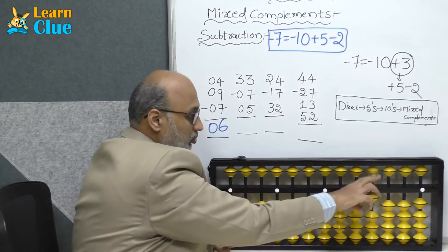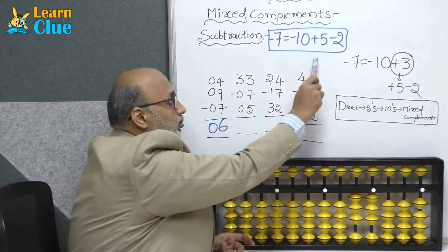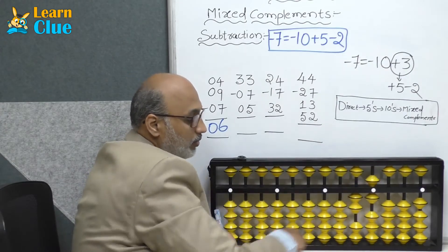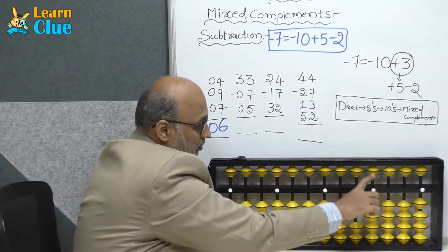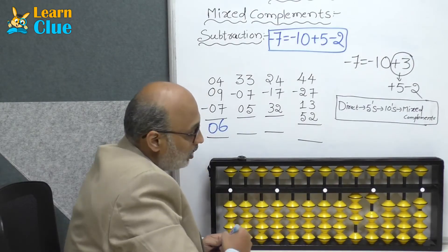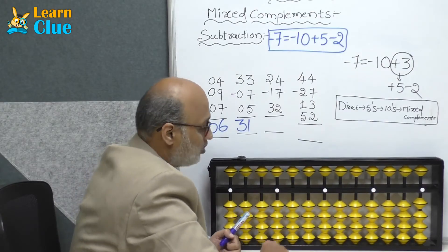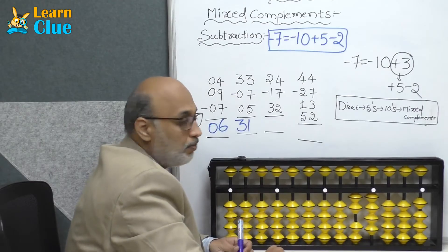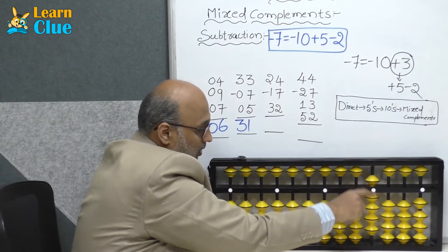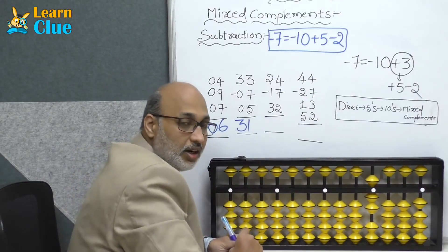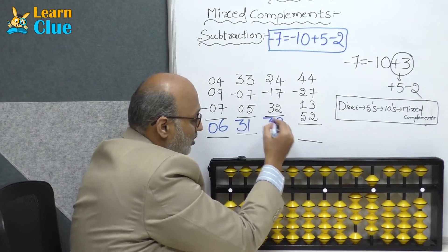Next problem: 33 — that's 30 plus 3. Minus 7: apply the same technique, minus 10 plus 5 minus 2. Now they are asking plus 5: how to do plus 5? That's minus 5 plus 10. The answer is 31. Next problem: 24 minus 17 — minus 10 minus 7. Minus 7 is nothing but minus 10 plus 5 minus 2. Now they are asking plus 32: plus 30 plus 2. The answer is 39.